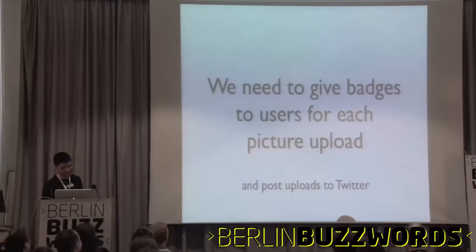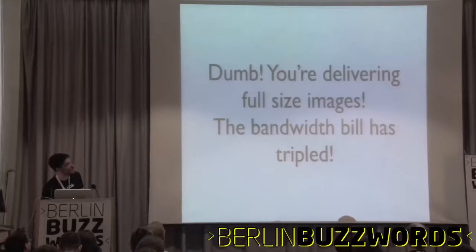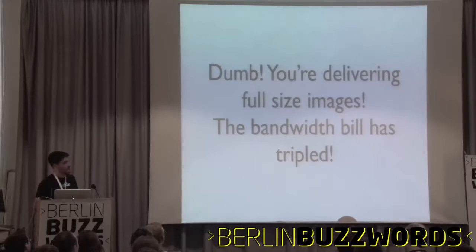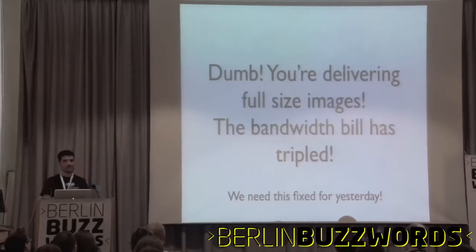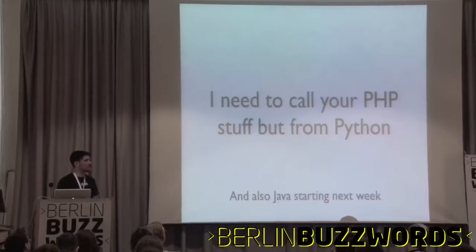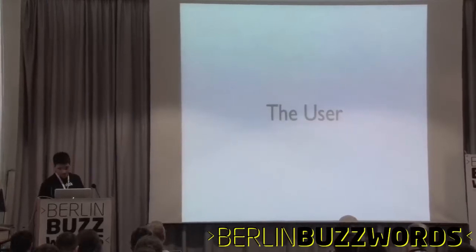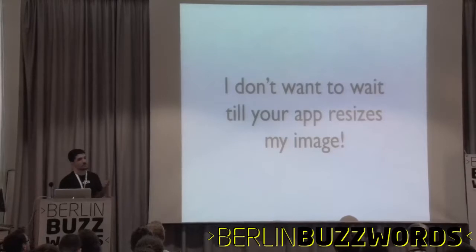And this has to be on Twitter also. Then the sysadmin — or swissadmin, in my case — comes to us and says: 'Hey, you are delivering full-size images. The bandwidth has tripled. The accountant manager is about to kill me, so we need this fix for yesterday.' And then the developer on the other team comes and says: 'I want to call your PHP stuff from Python, and maybe Java.' Then the user doesn't care about all our business requirements — he doesn't care that we need to resize the picture.